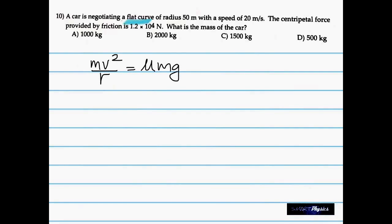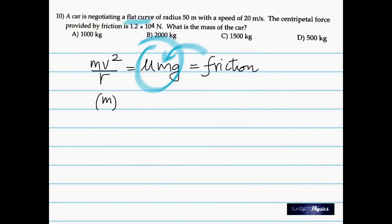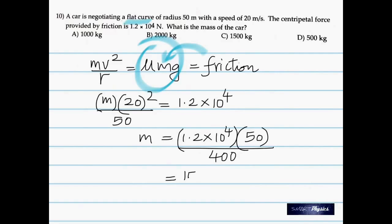That brings us to the last question, which is a straightforward one. A car is going around a flat curve, no banking, radius given 50 meters, speed given. And the centripetal force provided by friction is given. Now we know, we have done a problem like this before. We know that the centripetal force, which is mV²/r, is equal to friction. Actually, we did not need this, just put it straight ahead, equal to friction, and substitute the velocities, the radius, friction is given as 1.2 × 10⁴, rearrange that, make mass the subject, and calculate. 20² is what gives us the 400 there. It gets 1500 kilograms.